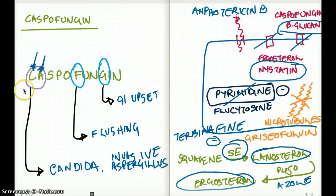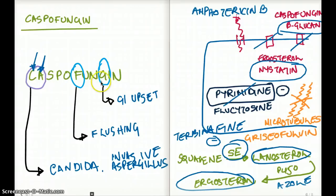G also stands for glucan — in caspofungin, we are preventing beta-glucan synthesis, thereby inhibiting cell wall synthesis. So just from the name caspofungin, you can recall the mechanism, clinical use, and toxicities.